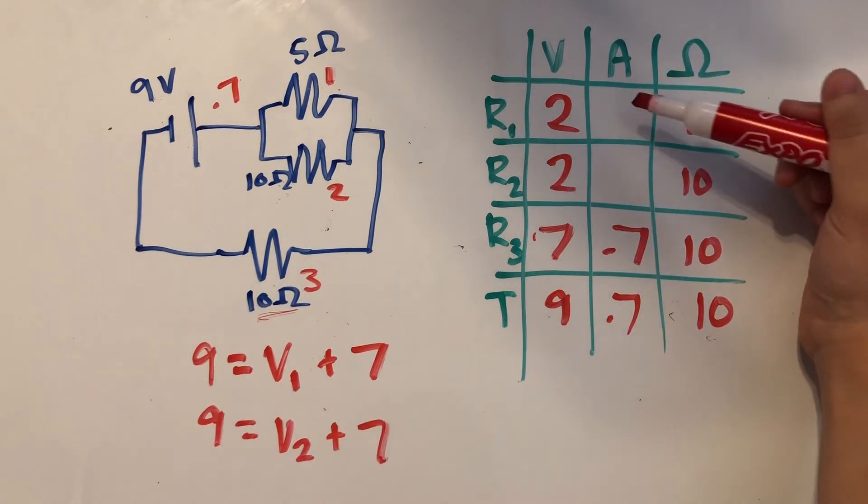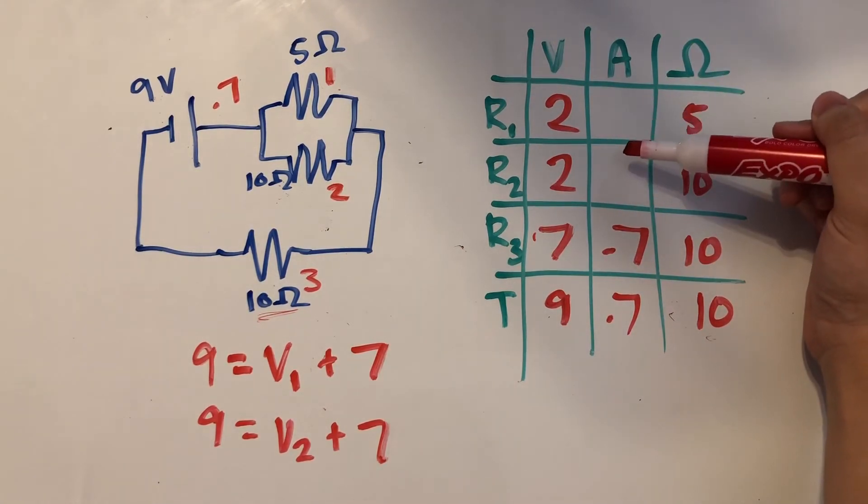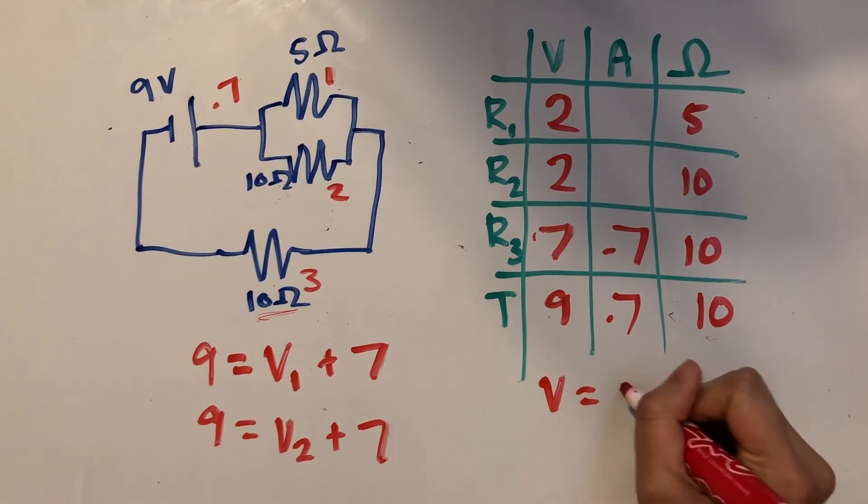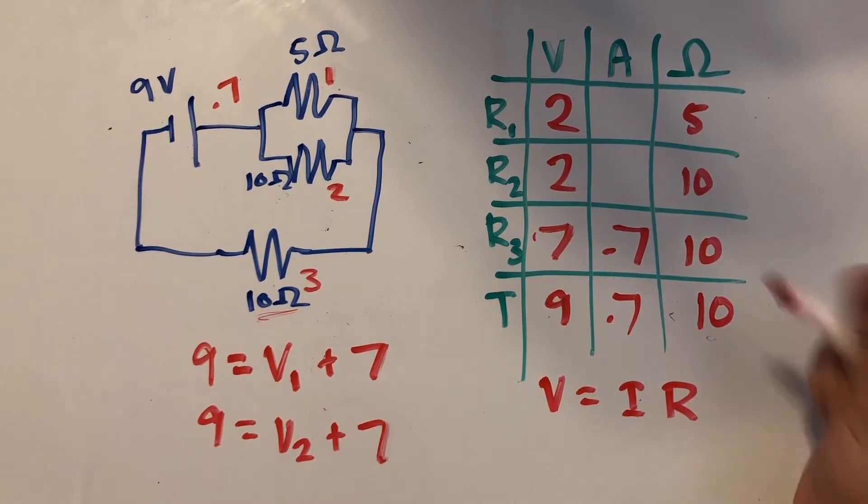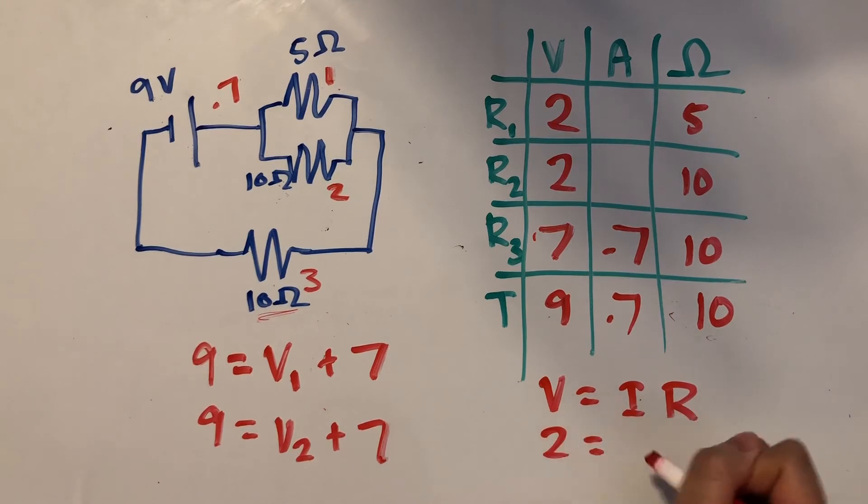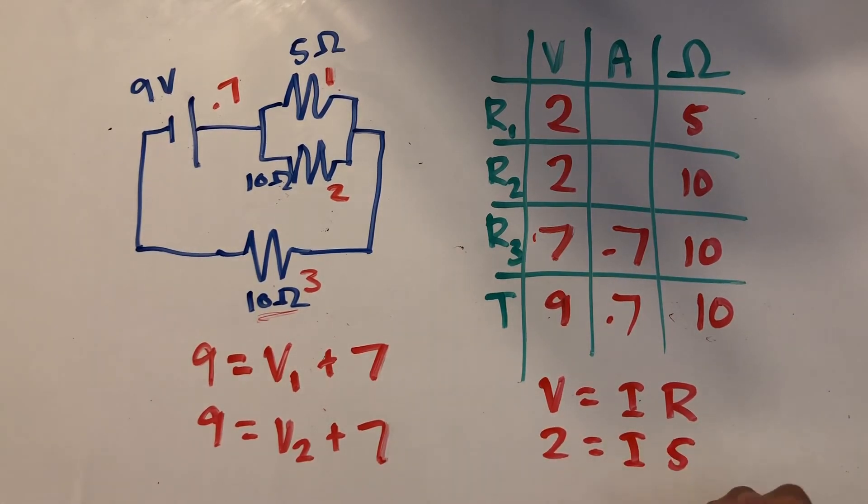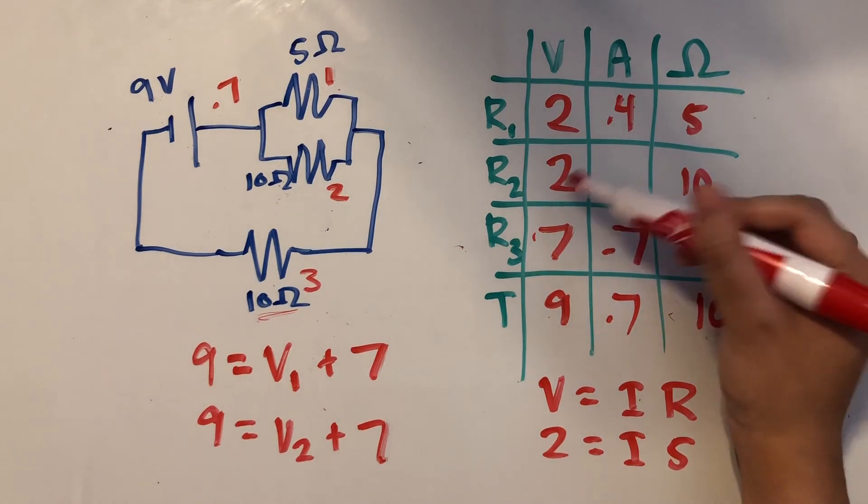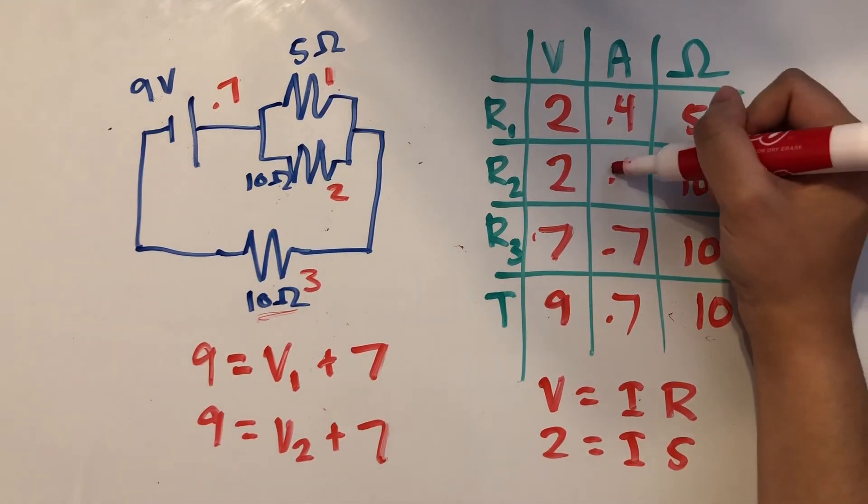Now we can really easily find the currents at resistors 1 and 2 using Ohm's law again. So voltage is equal to current times resistance. We have 2 equals current times 5. So the current here is going to be 2 over 5. So this is going to be 0.4. And 2 over 10 is going to be 0.2.